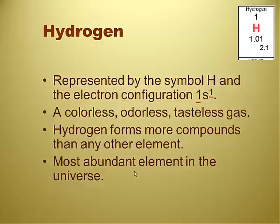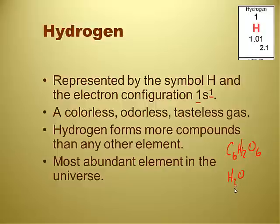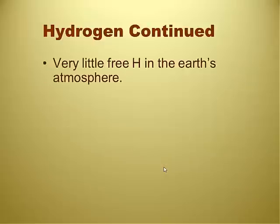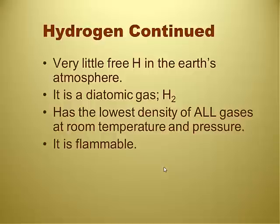Hydrogen can form other compounds that aren't necessarily gases — like sugar, C6H12O6, which has 12 hydrogen atoms and is a solid, or liquid water at room temperature. It is the most abundant element in the universe; if you doubt that, check out what stars are made of. There's very little free hydrogen in Earth's atmosphere because hydrogen gas is less dense than the surrounding air and rises up — as the Hindenburg learned. It's also extremely flammable.